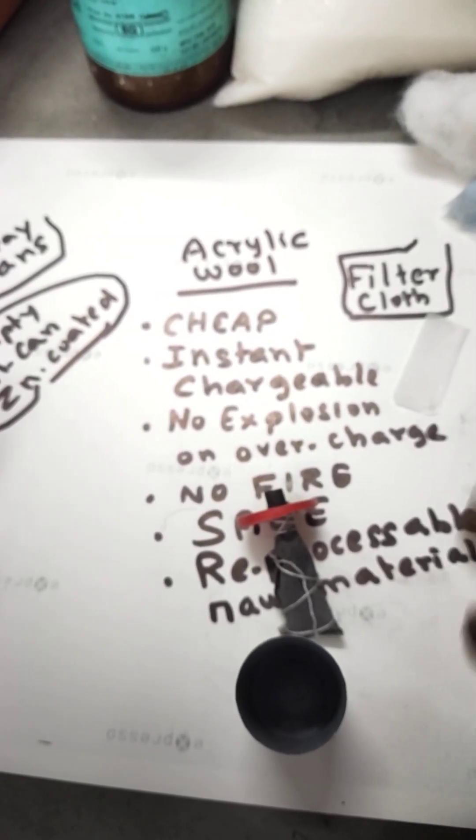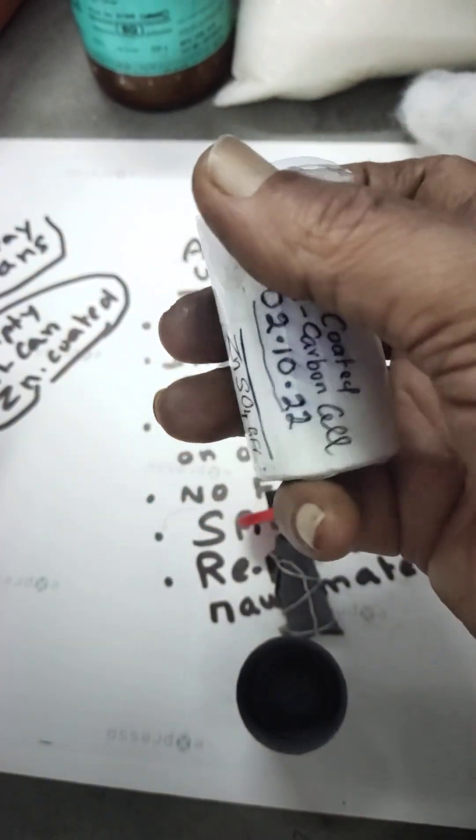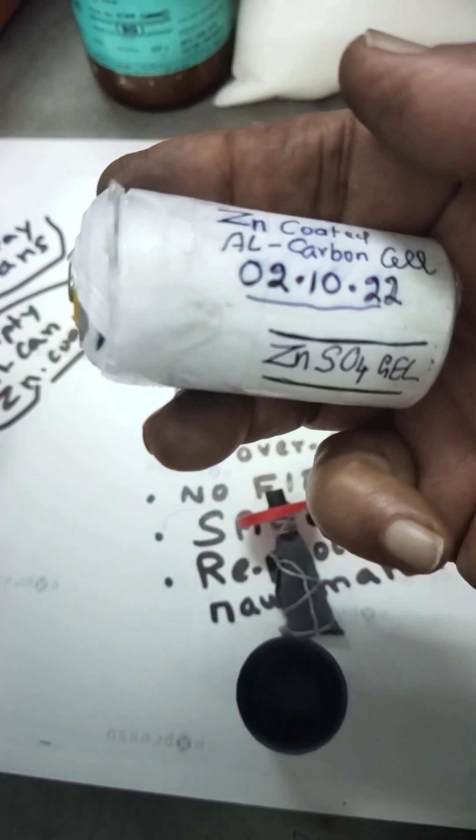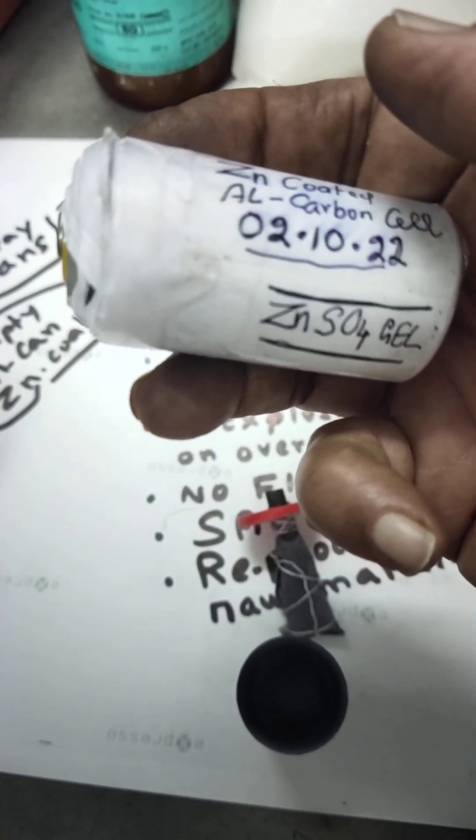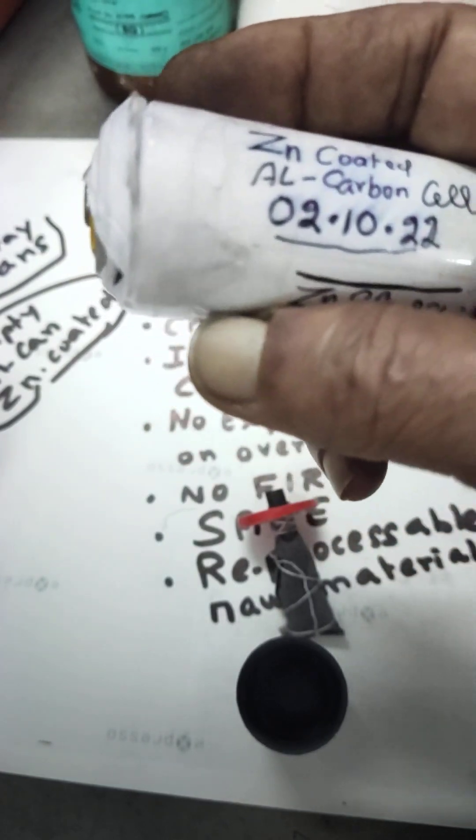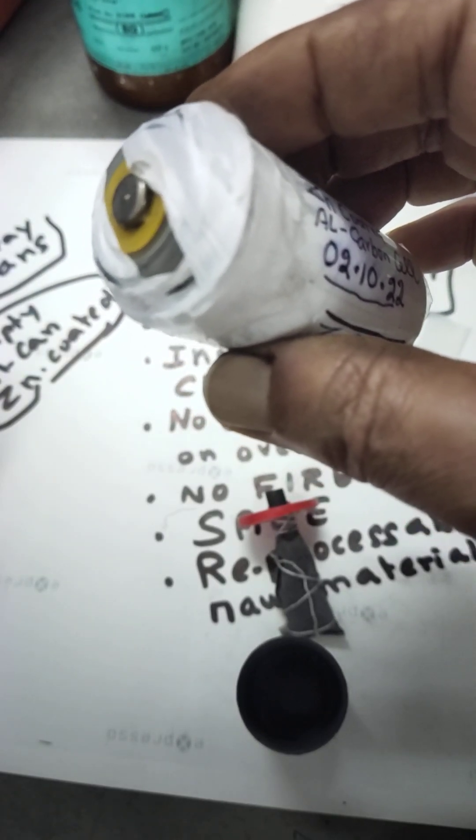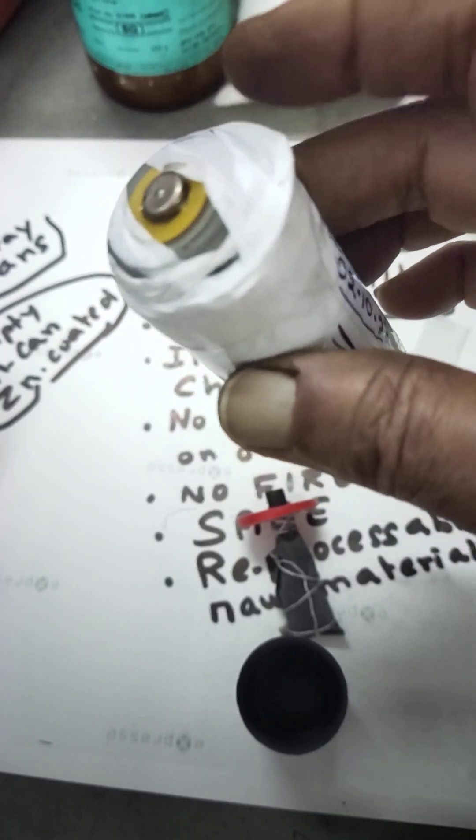Previously I prepared aluminum carbon batteries using zinc sulfate. Zinc sulfate is also very good with long shelf life and is very safe. You can recharge many times, more than 500 times if I'm right.